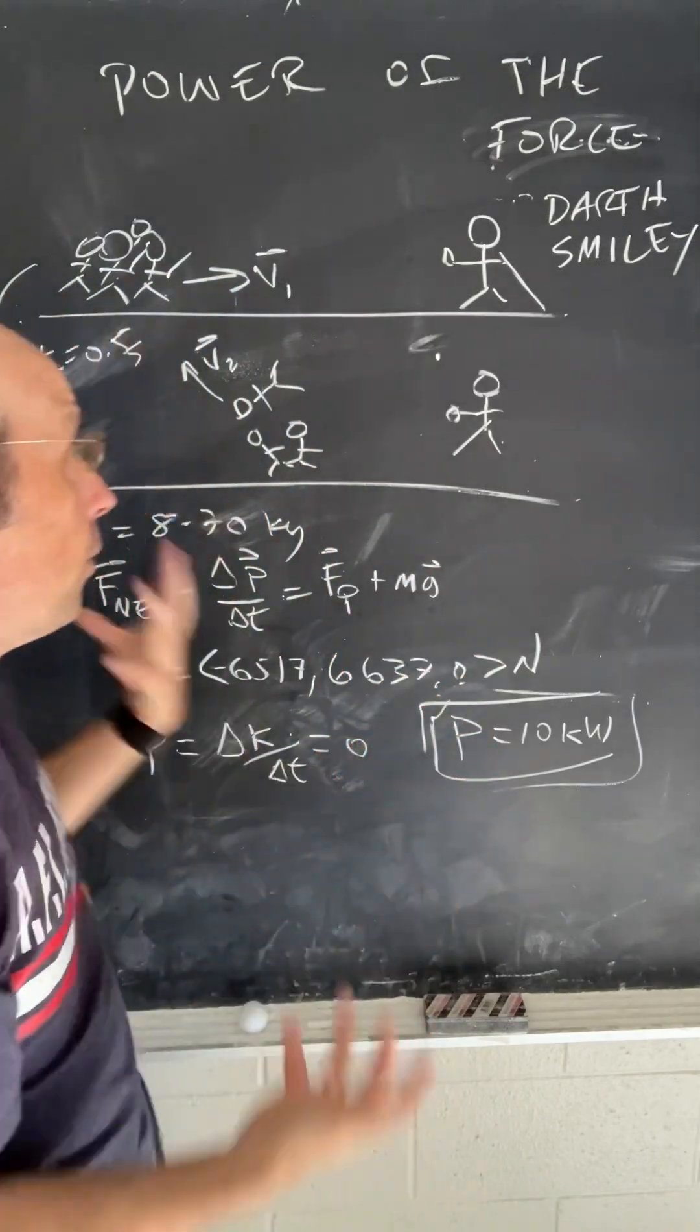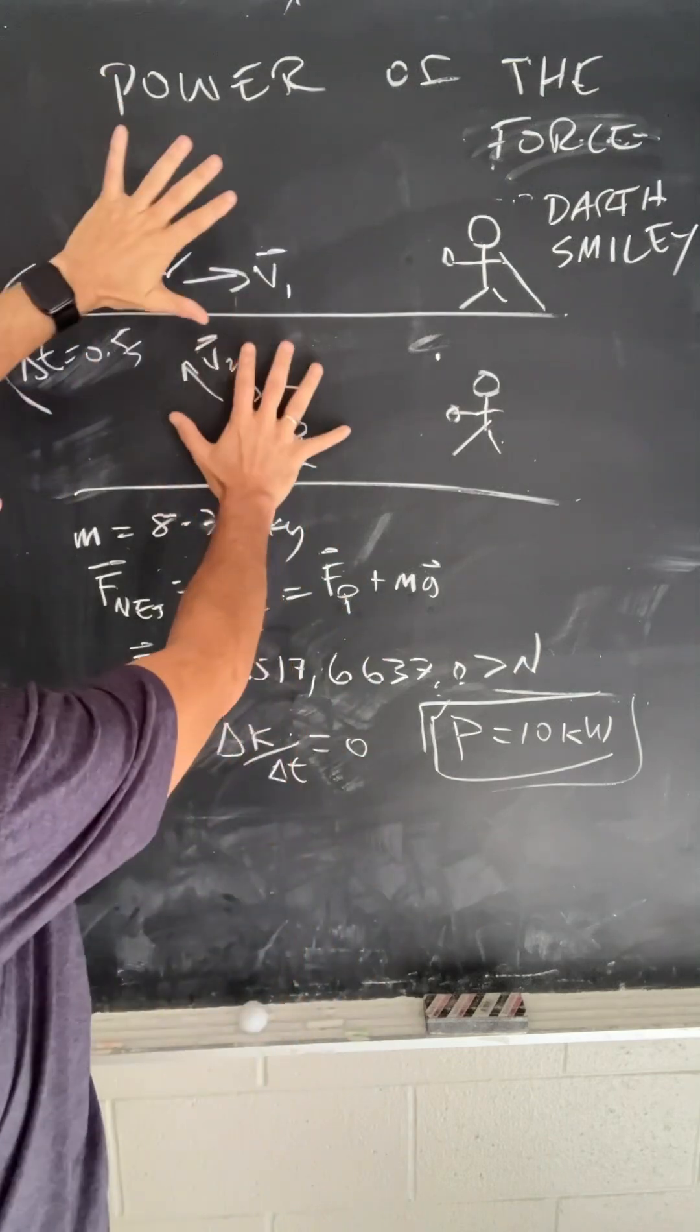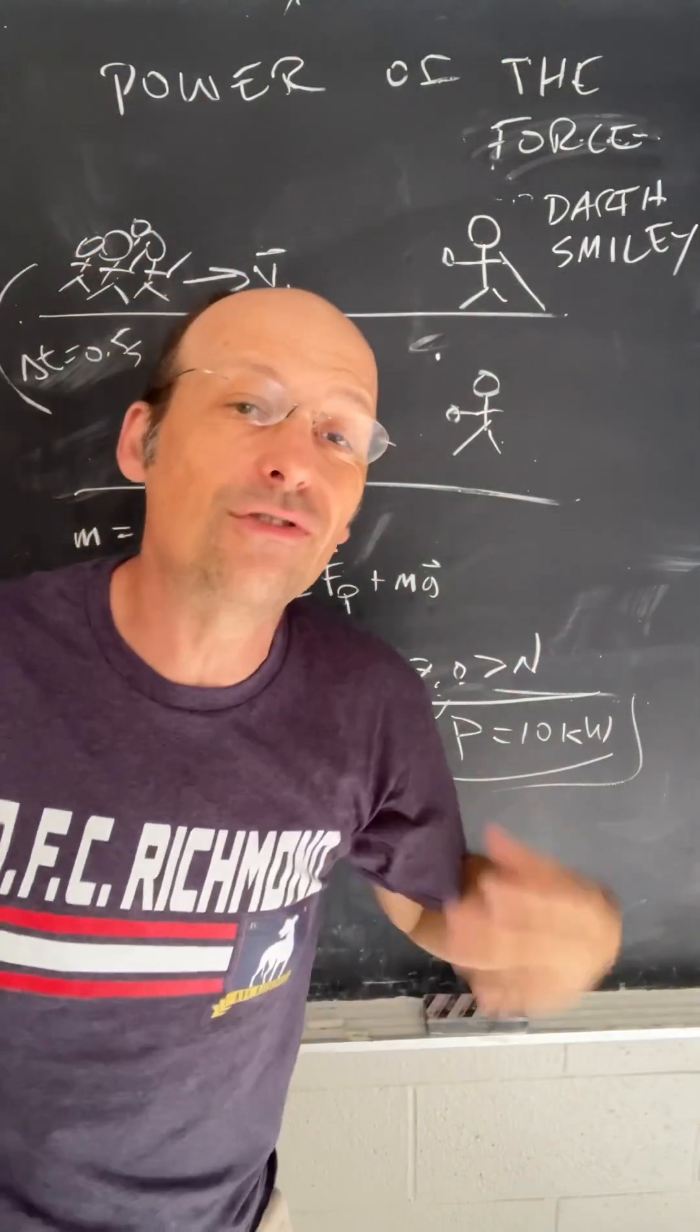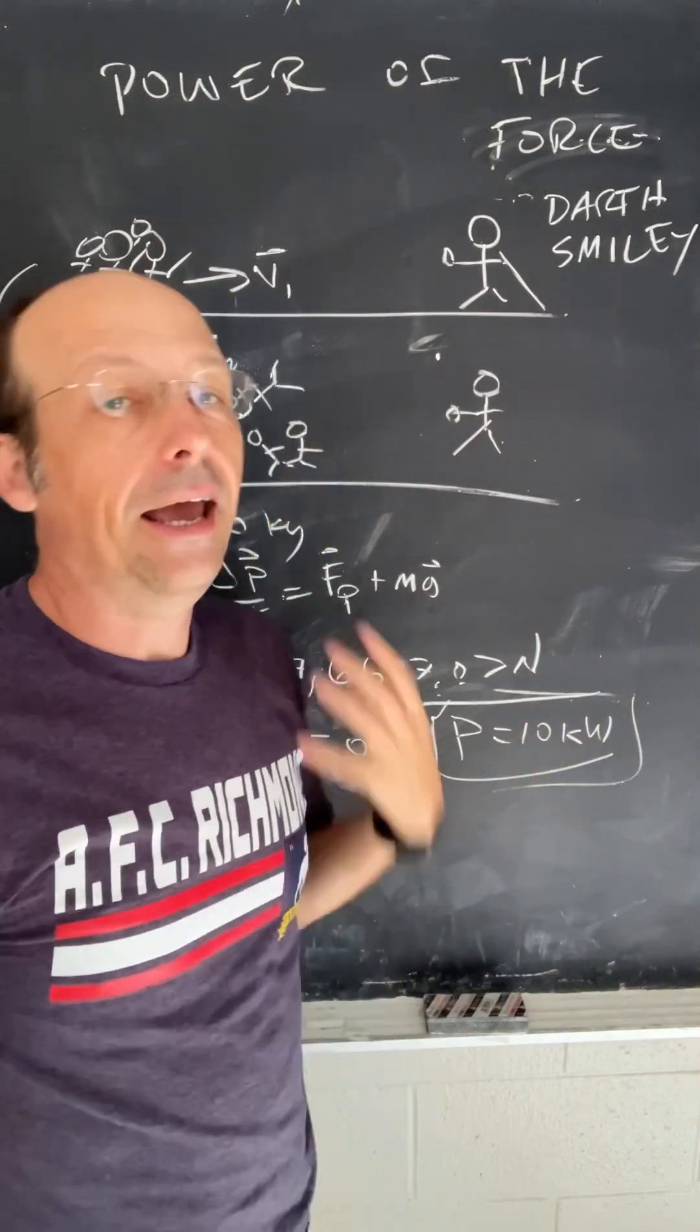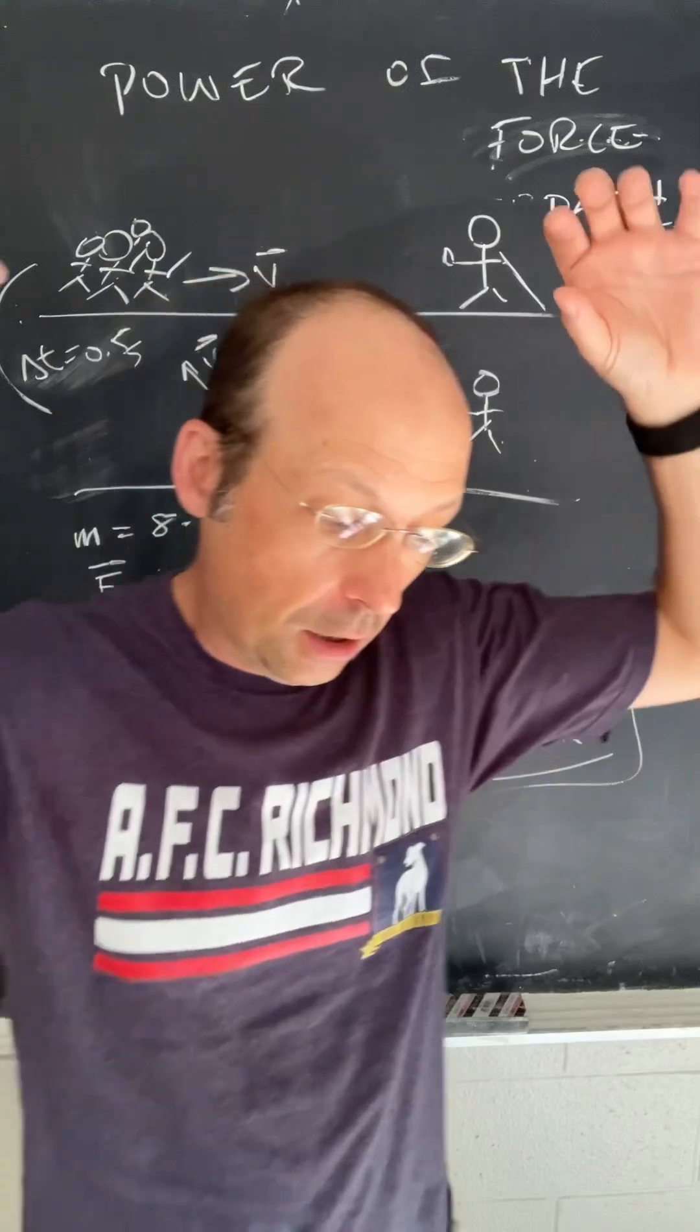What about the power? Well, technically it'd be zero because the change in kinetic energy is zero because kinetic energy is scalar and they're moving about the same speed. However, I could do just moving away and I can calculate the power that way and I get 10,000 kilowatts.